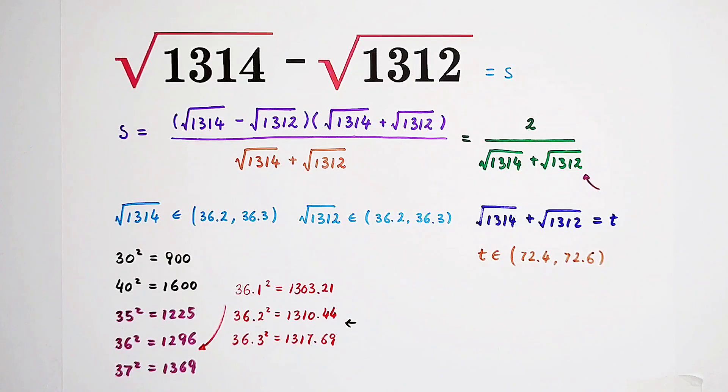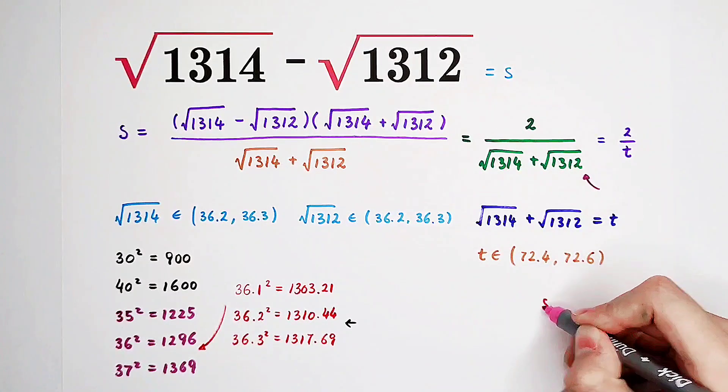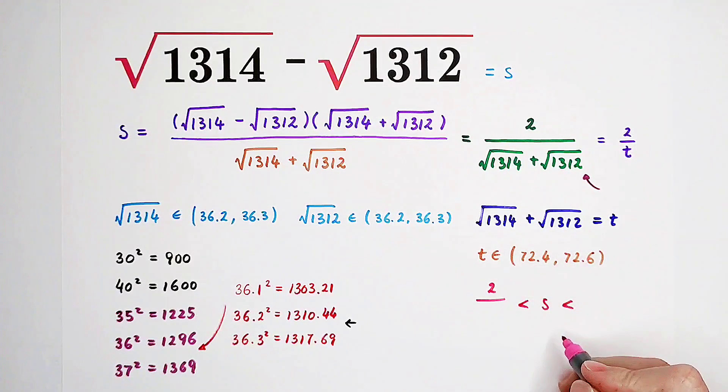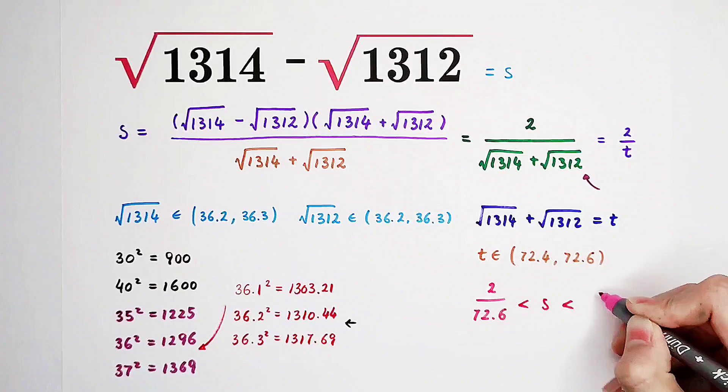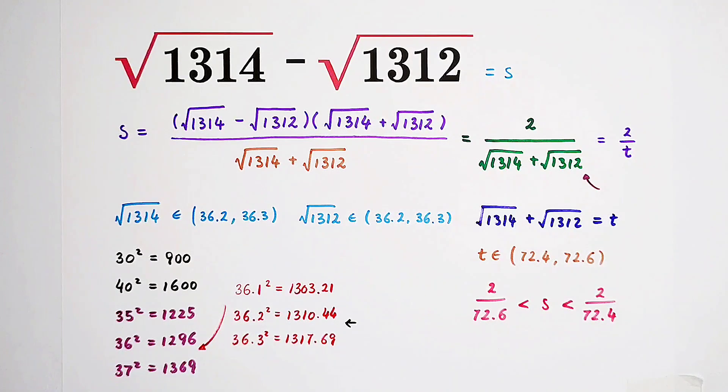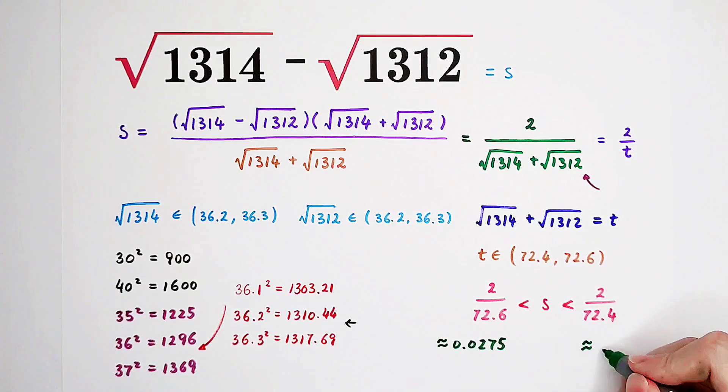So now, t is between this. And we know that s is just 2 over t. So now, s should be greater than 2 over the greater value, it is 72.6, and smaller than 2 over 72.4. And now, using the long division, you can get the answer or you can get the approximate values of these two guys. This guy, approximately equal to 0.0275. And this guy over here, it is 0.0276.